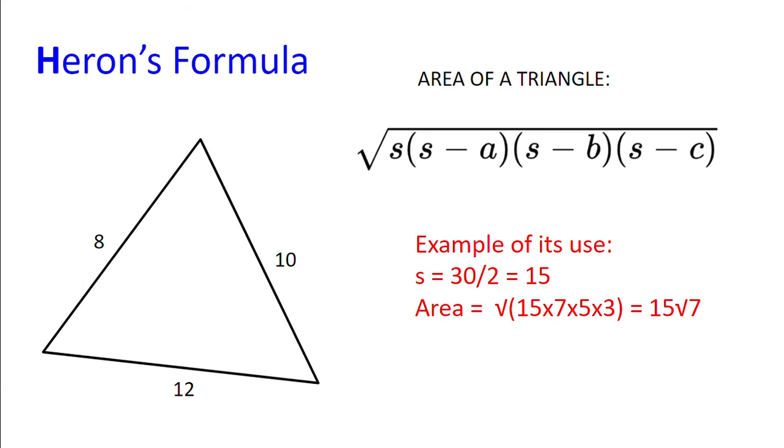Next we have Heron's formula. We can use Heron's formula to find the area of a triangle to be the square root of the semi-perimeter of the triangle, multiplied by the difference between the semi-perimeter and all the side lengths in turn.